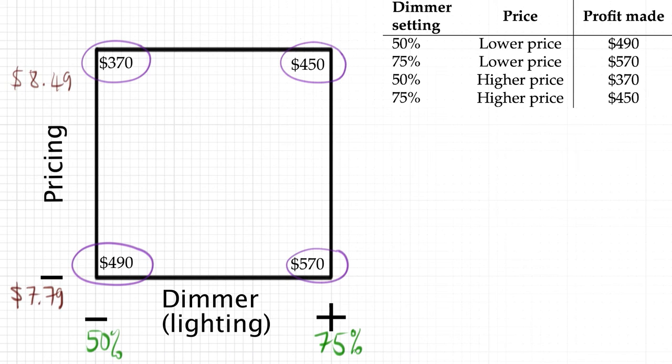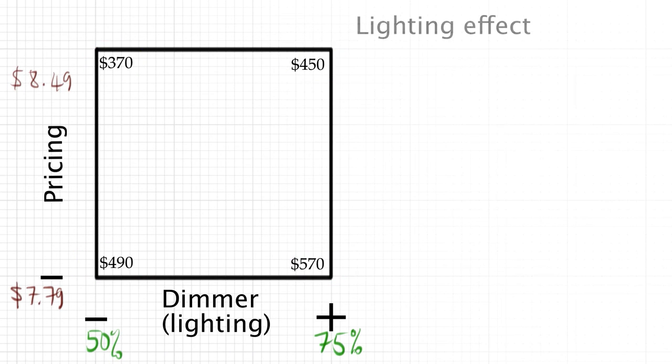Now we are ready to analyze the results. First, let's analyze the effect of lighting amount. We have two chances to judge the effect of lighting. The first is to consider the difference between the high level of lighting compared to the low level of lighting, but keeping prices at their low values. When we do this, we see the difference is 570 minus 490, that's a difference of $80.